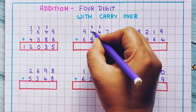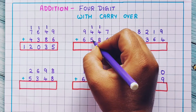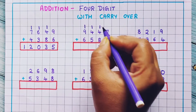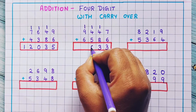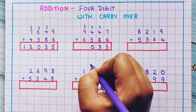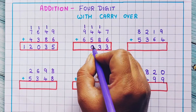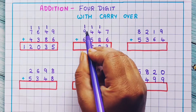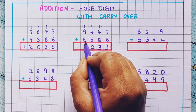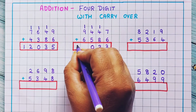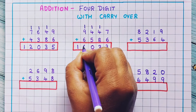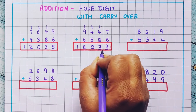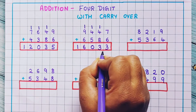Now 1 plus 4 is 5, and 5 plus 5 is 10. So again I will write 1 here as carryover and 0 here. Now 9 plus 1 is 10, and 10 plus 6 is 16. So here I will write 1 and 6. The answer is 16,033.